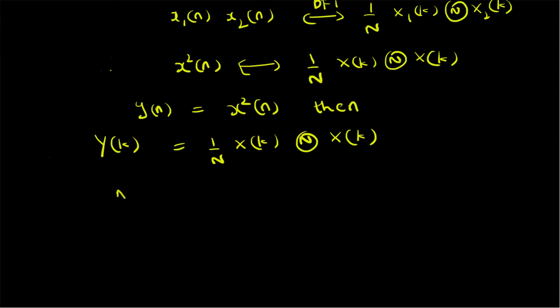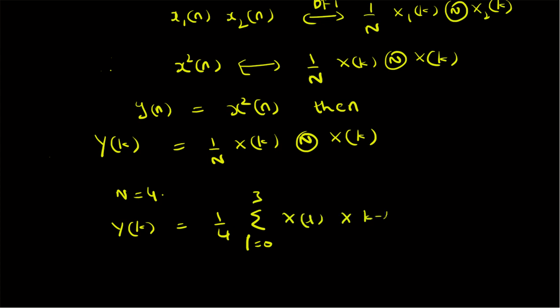Since N is equal to 4, if we let y(n) = x²(n), then Y(k) is defined as (1/4) times the summation from l = 0 to 3 of X(l) times X((k − l) mod 4). This is the definition of the circular convolution for these two sequences.